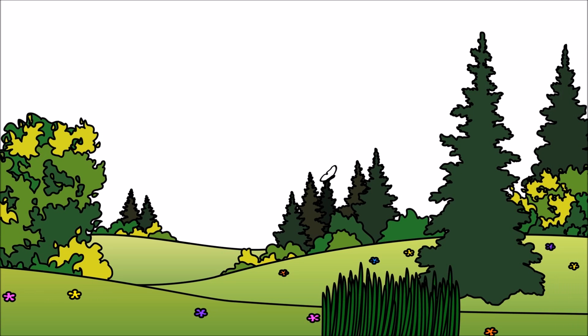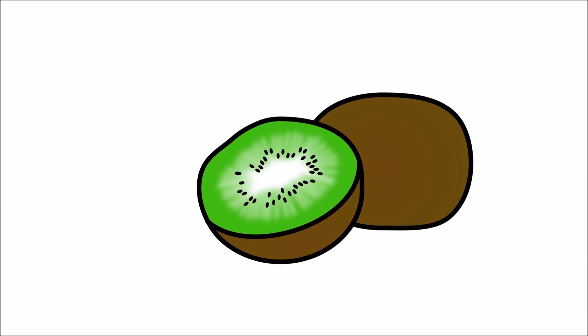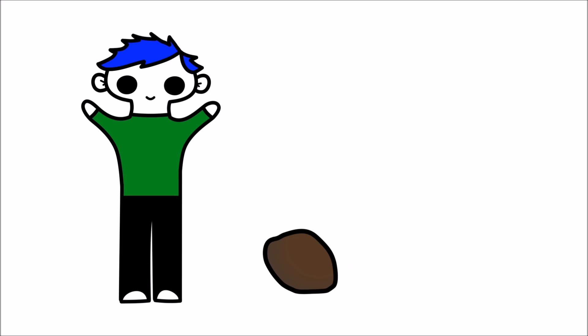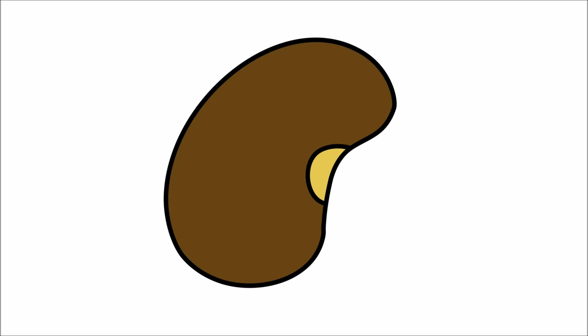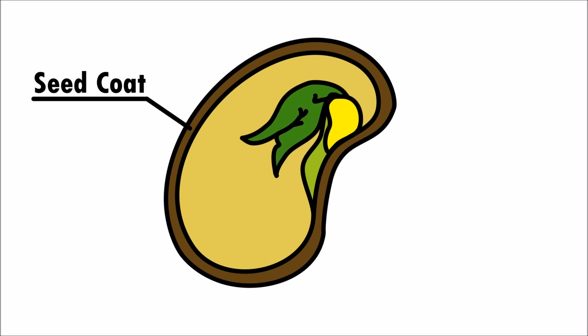Some seeds are very small and other seeds, like the seeds from a coconut tree, are very large. The outer layer of the seed is called the seed coat. This protects the food inside the seed and prevents it from drying out.